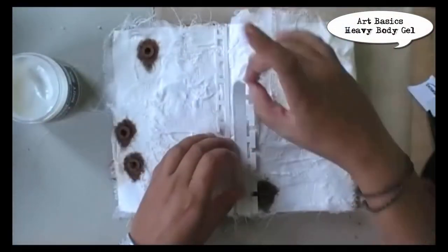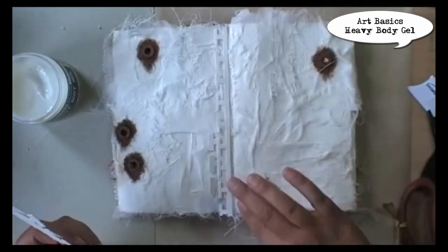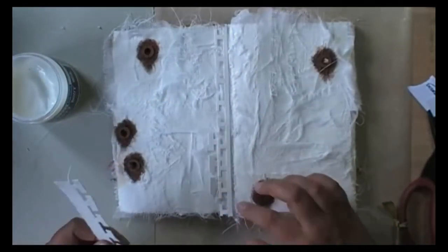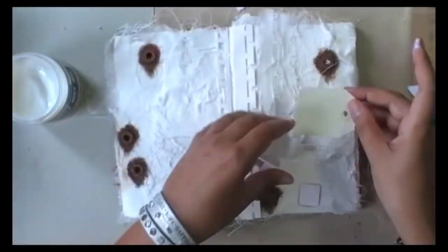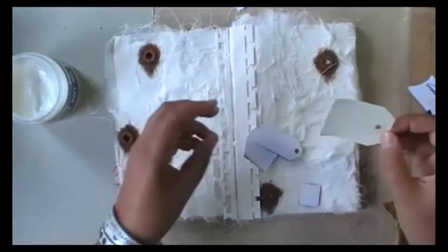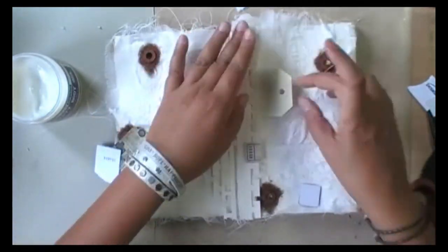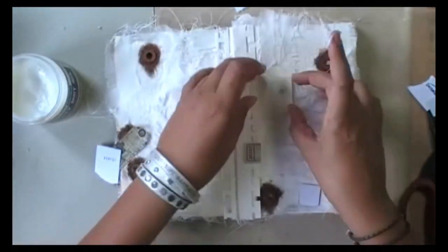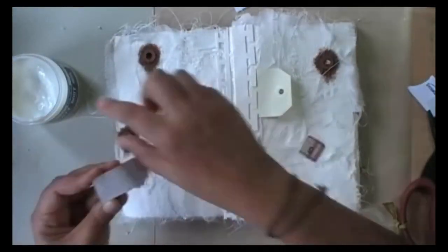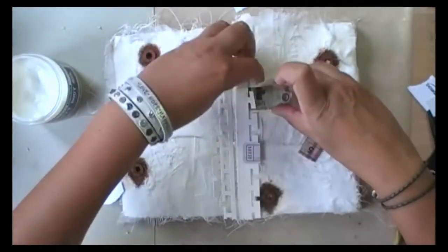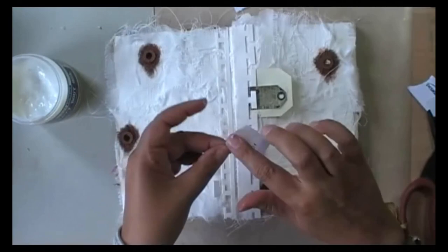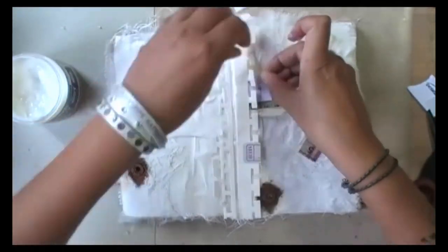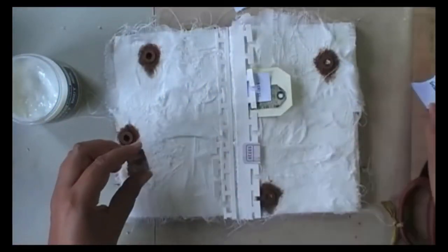And then again, sticking everything down using heavy body gel. If you haven't used this one before, you might think, what's the point of having yet another glue? Well, the difference between heavy body gel and 3D matte gel or 3D glass gel is that this one is thicker, so it stays in place even more and it dries faster. So you have more body to glue stuff down and it dries faster. Just how cool is that?